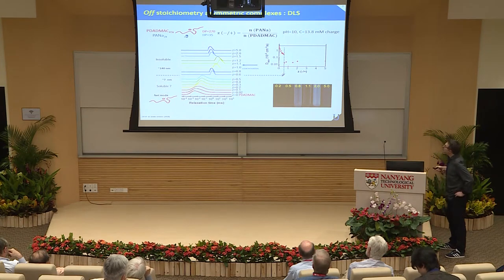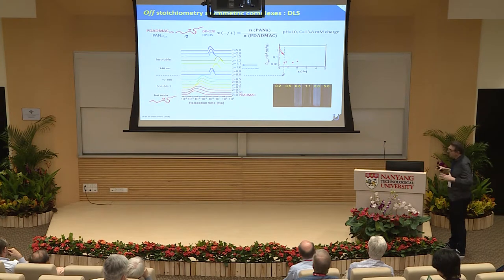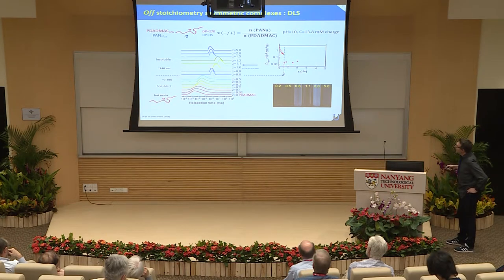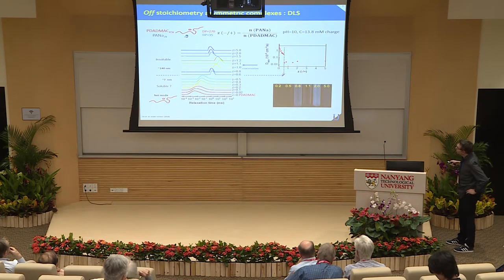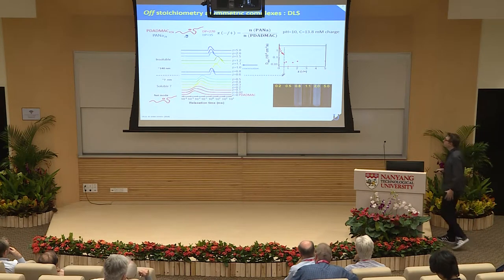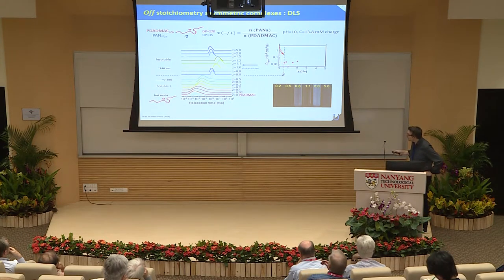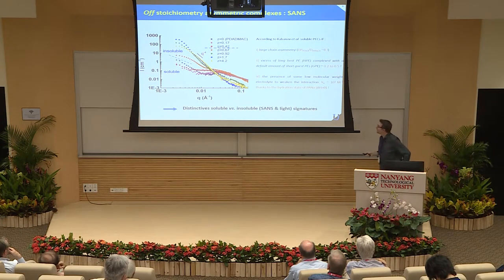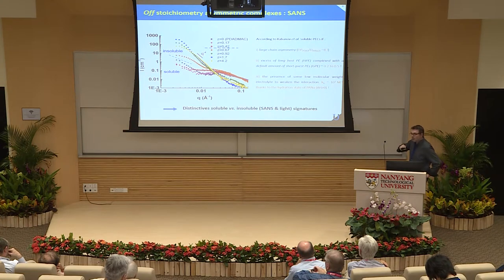If we do light scattering quickly, for low charge ratio, the diffusion coefficient is very high — related to the fast mode found in a very charged liquid. If you go up in charge ratio, there is a strong transition around Z equal 0.6, where you start to generate much bigger objects — insoluble objects — compared to the soluble ones that look like the original polyelectrolyte. In SANS neutron scattering, it's even more obvious: very different signatures above and below the Z equal 0.6 threshold.